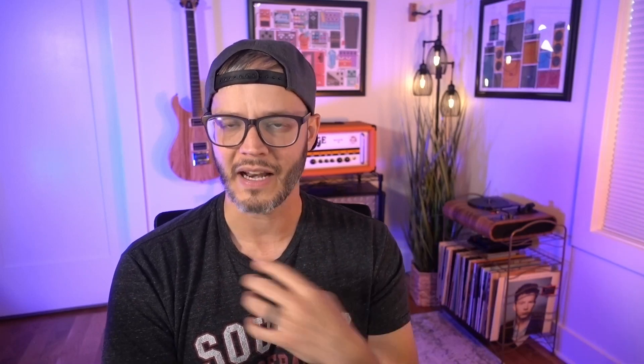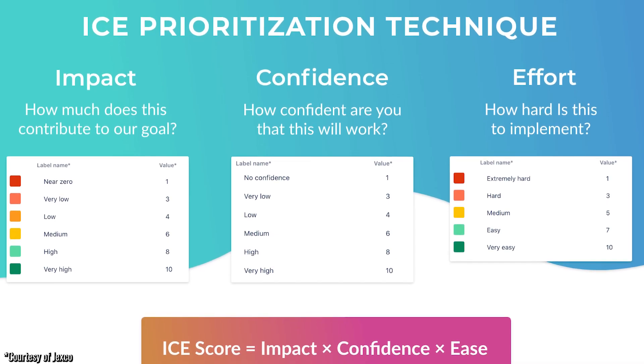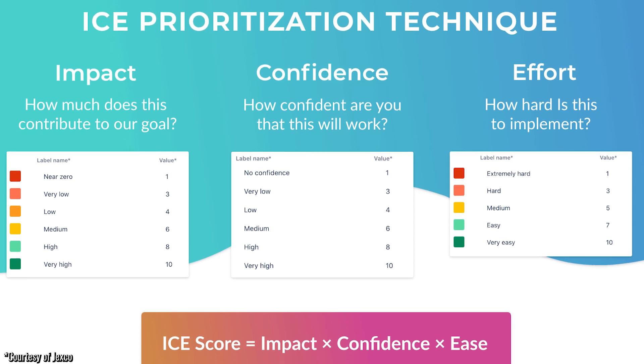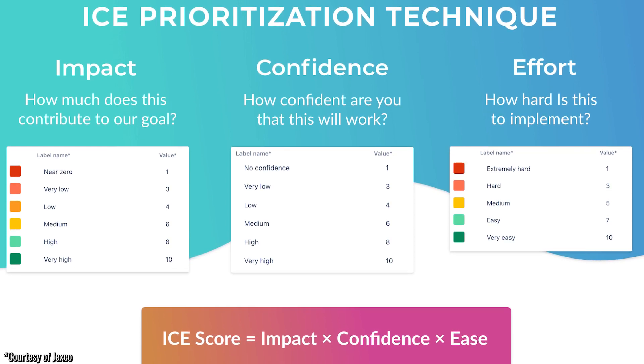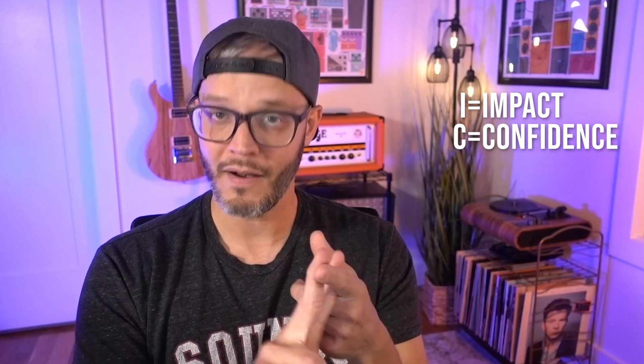I have a framework for you to think through and rank the platforms that might work best for you. There's a framework called ICE — ICE stands for impact, confidence, and ease. I use this sometimes when I'm making decisions in my own business when I have multiple options and need to choose the best one right now.